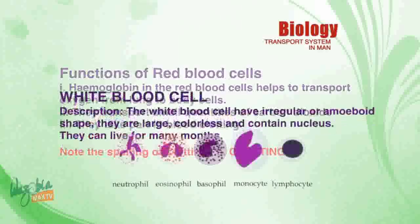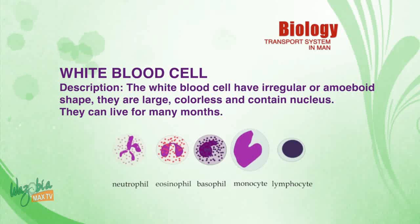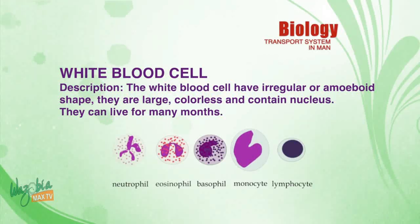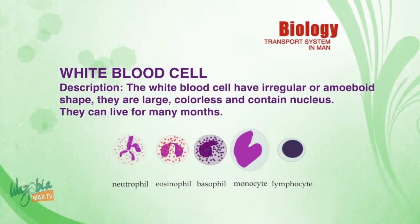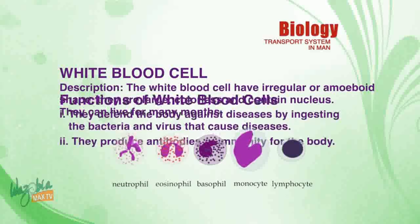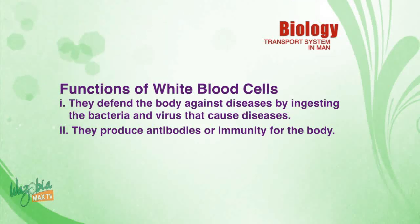White blood cells: description — the white blood cell has an irregular or amoeboid shape. They are large, colorless, and contain a nucleus. They can live for many months.